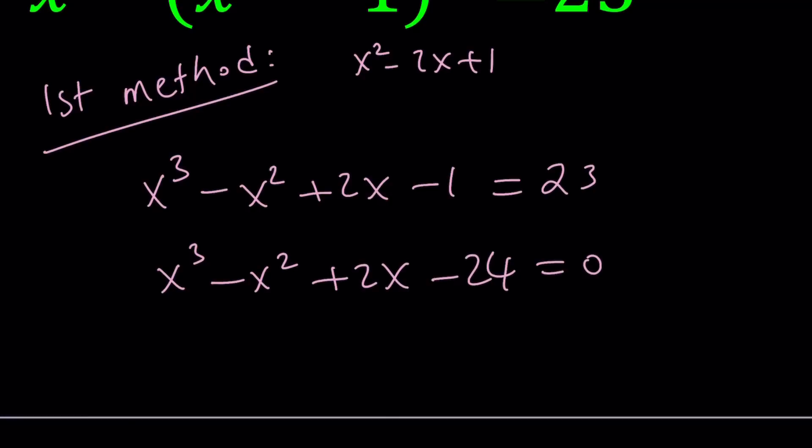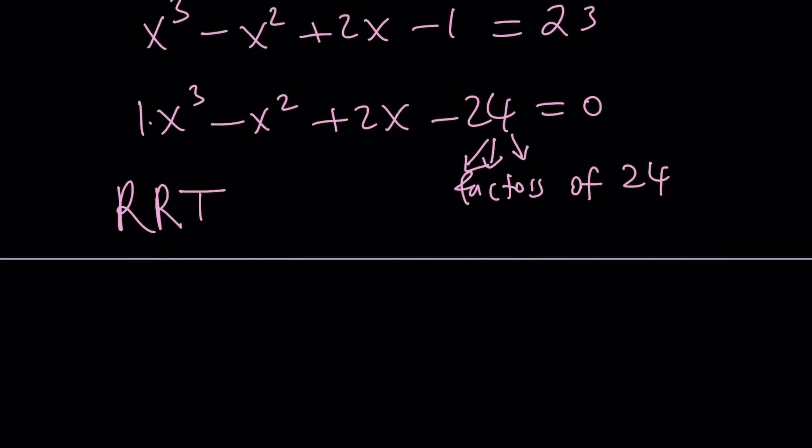If we arrange these terms, subtract 23, we're going to get a cubic equation x³ - x² + 2x - 24 = 0. While cubic equations can be solved, we could also use what is called RRT. Are you familiar with RRT? RRT is Rational Root Theorem. Basically, the Rational Root Theorem says if there's a rational root of the polynomial equation, then you have to look at factors of the constant term divided by the factors of the leading coefficient.